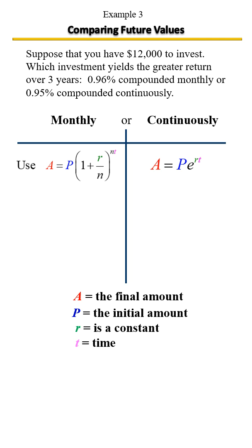Let's go ahead and begin calculating compounded monthly. For both values, we're going to be solving for A. I'm going to start with P here. The initial amount is our $12,000 we're investing. Our rate is going to be 0.96%. Move that over two decimal places to the left, and you have 0.0096.